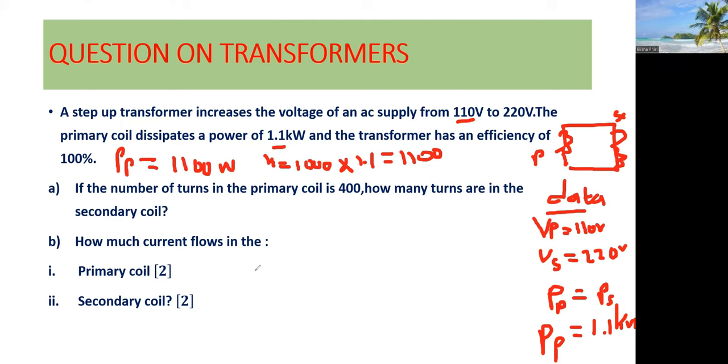So we have all the pieces of information that we need in place before we actually begin to solve the problem. Now what is it that they want us to determine? They're saying if the number of turns in the primary coil is 400, NP is equal to 400. How many turns are in the secondary coil? In a step-up transformer, there are more turns in the secondary coil as compared to those in the primary coil.